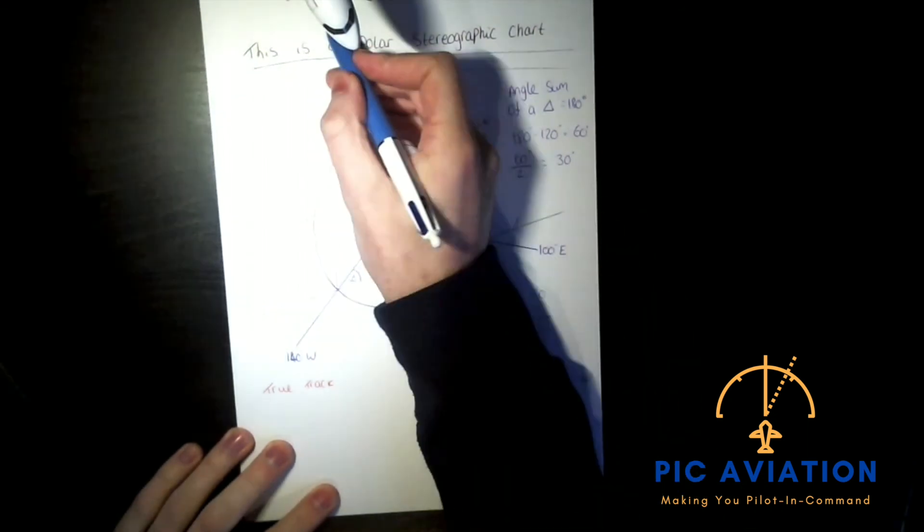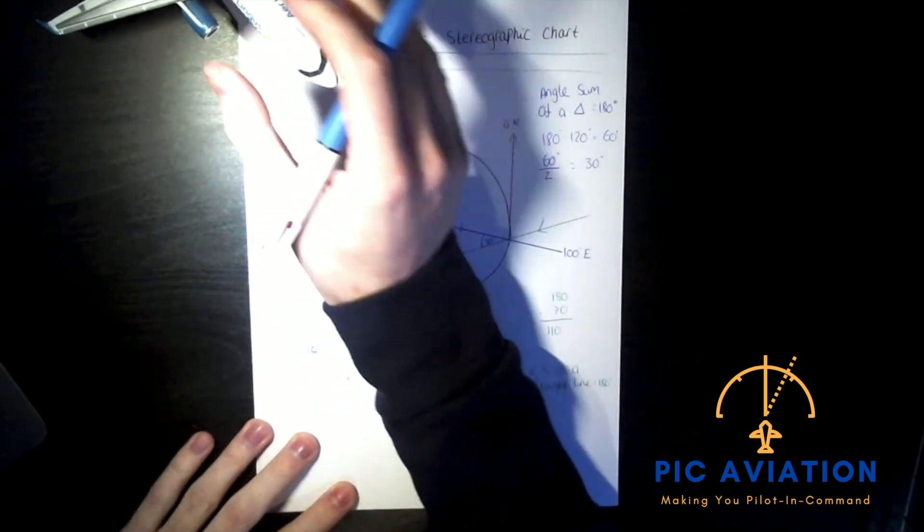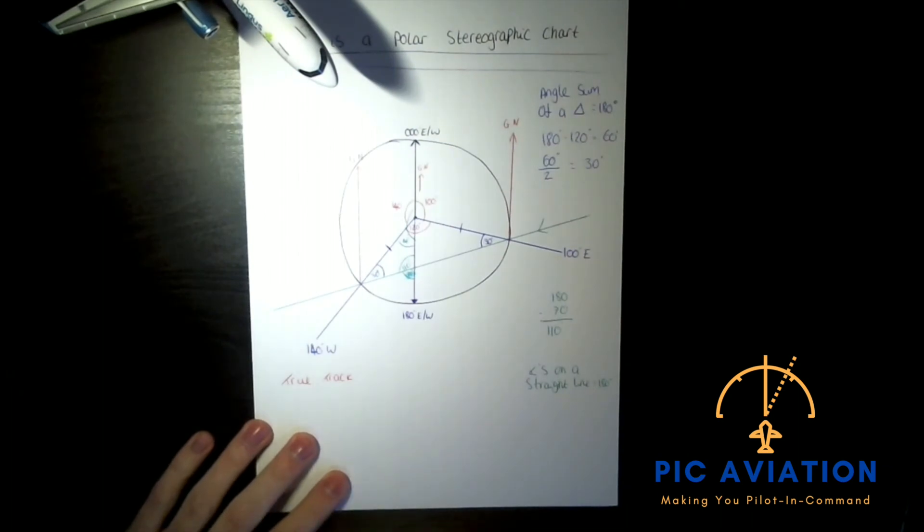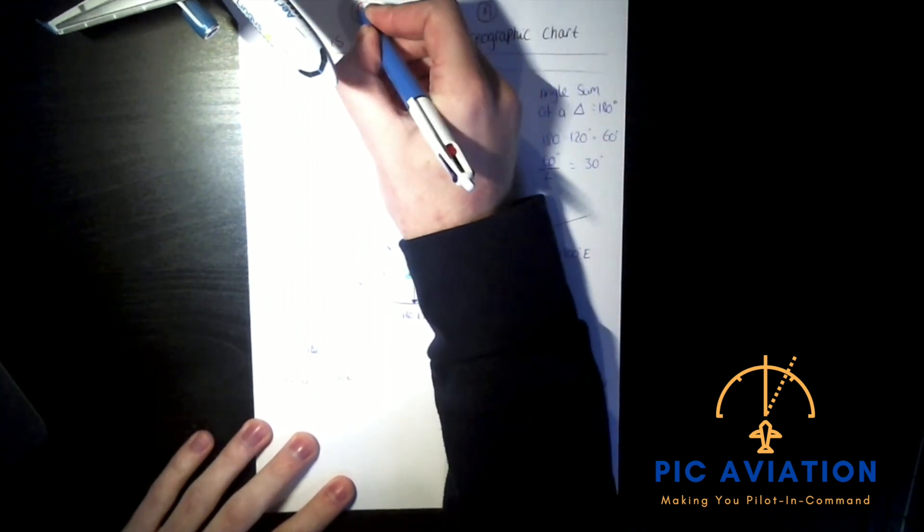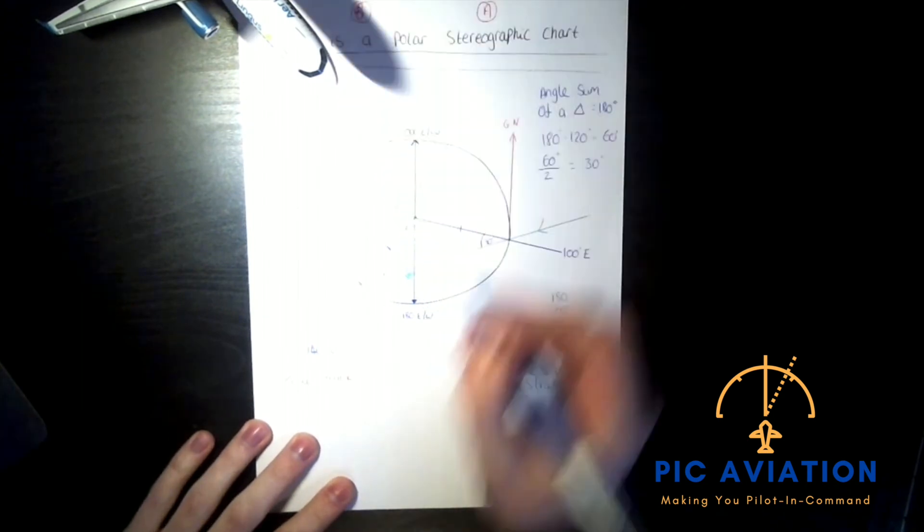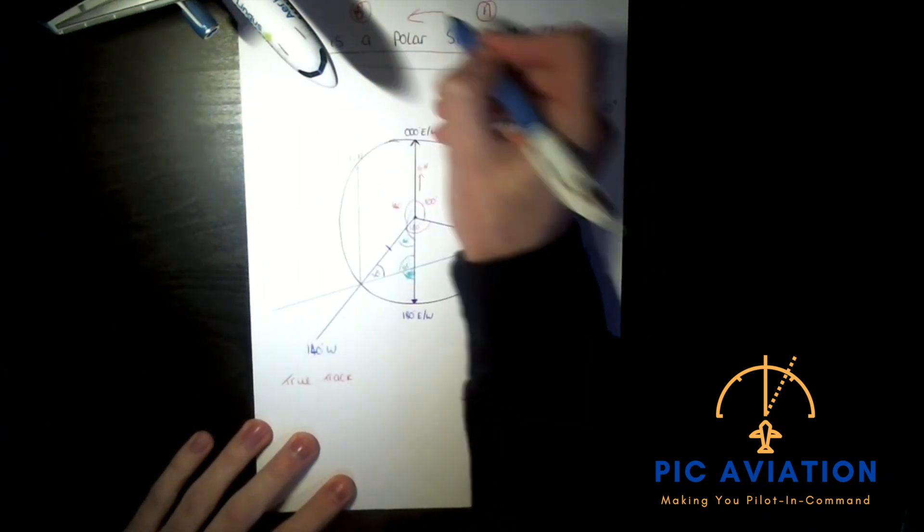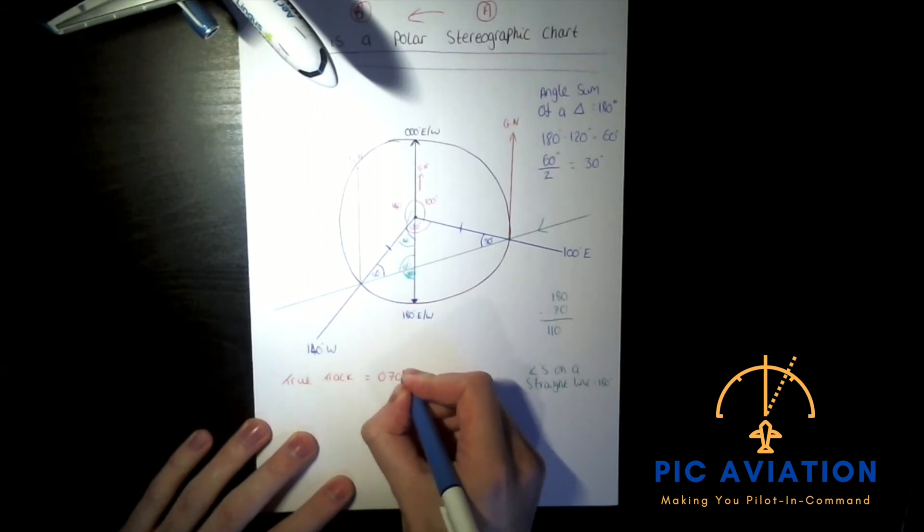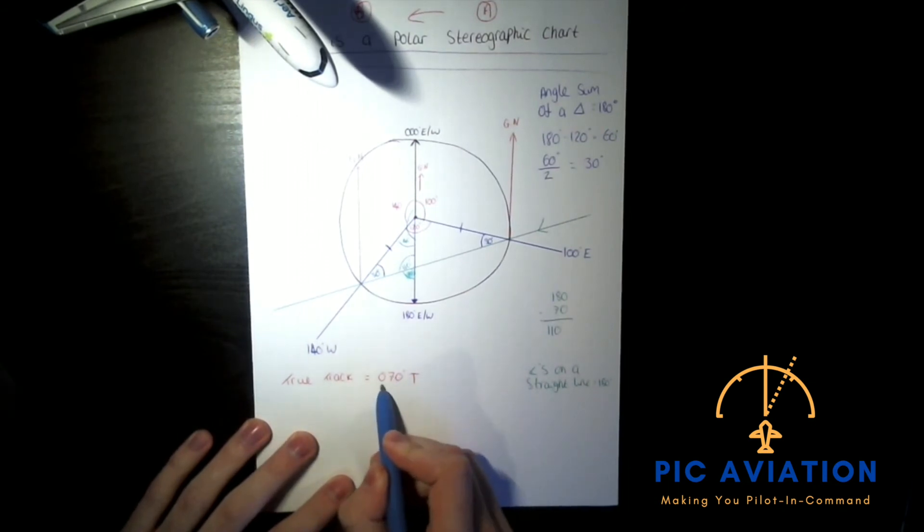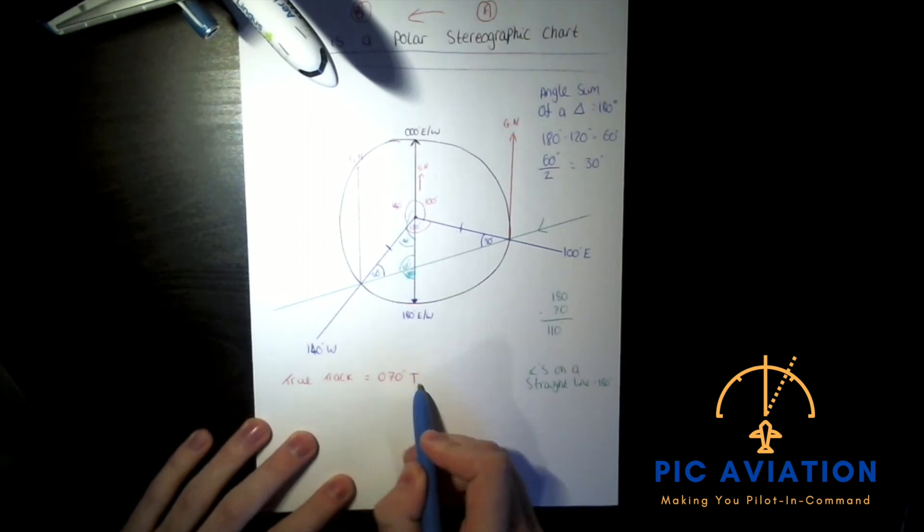We can say the true track is 070 degrees true. Remember. The convention is a line of longitude. It's a longitude value. So you have to make sure that zero is there. It's not a latitude. And it's a true reference bearing. And therefore we put the T at the end.